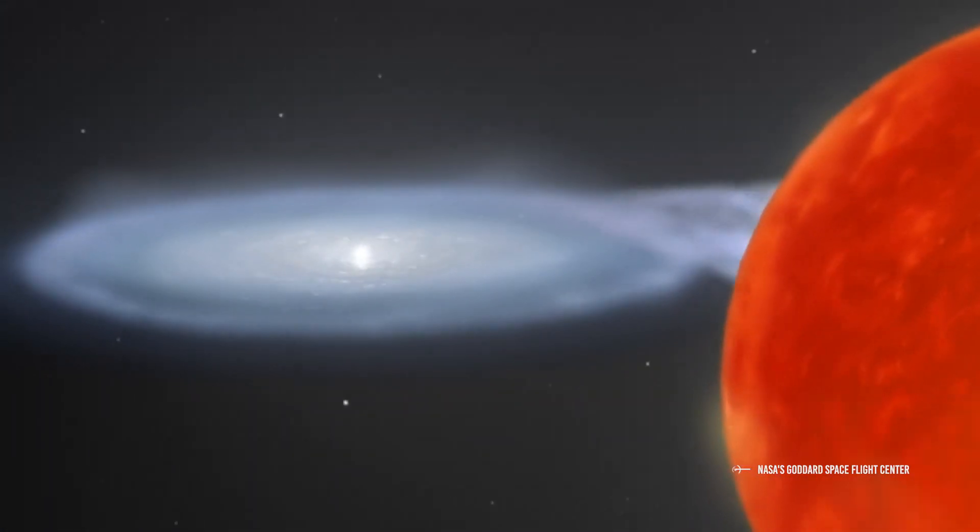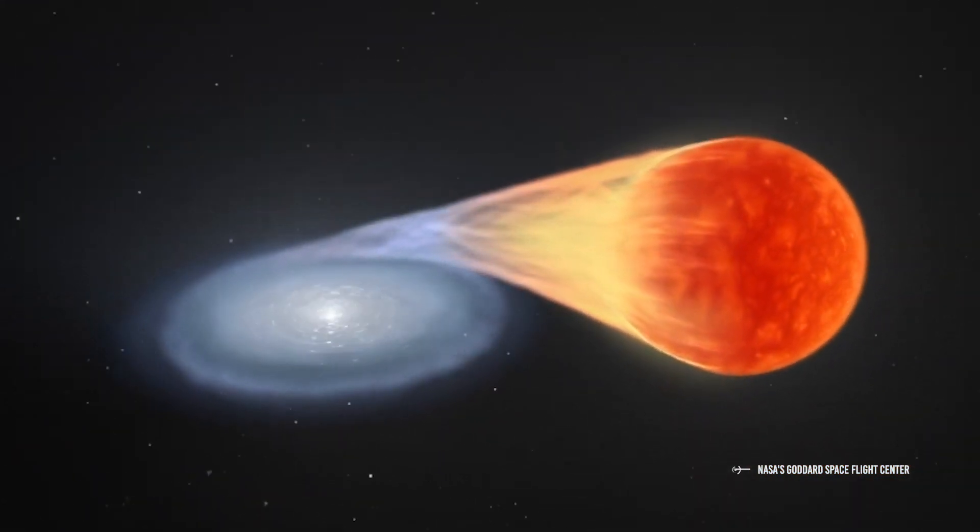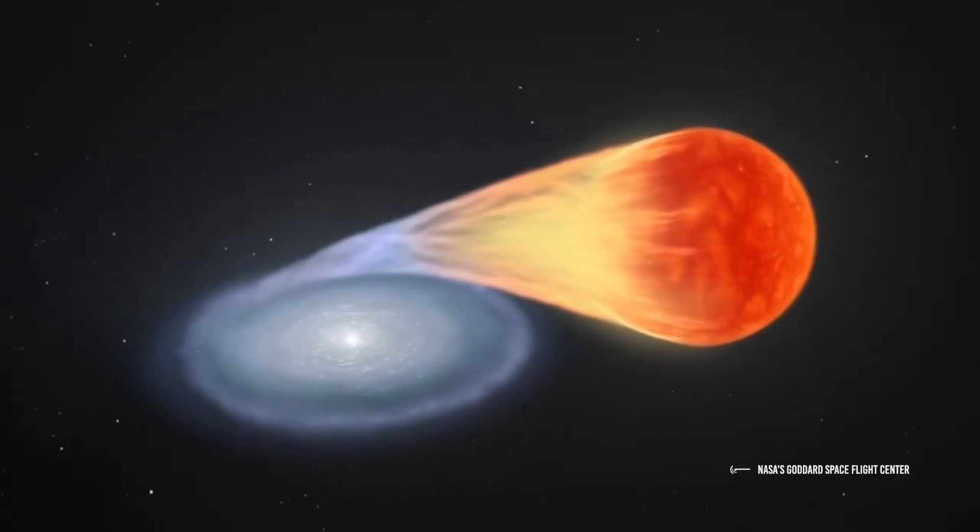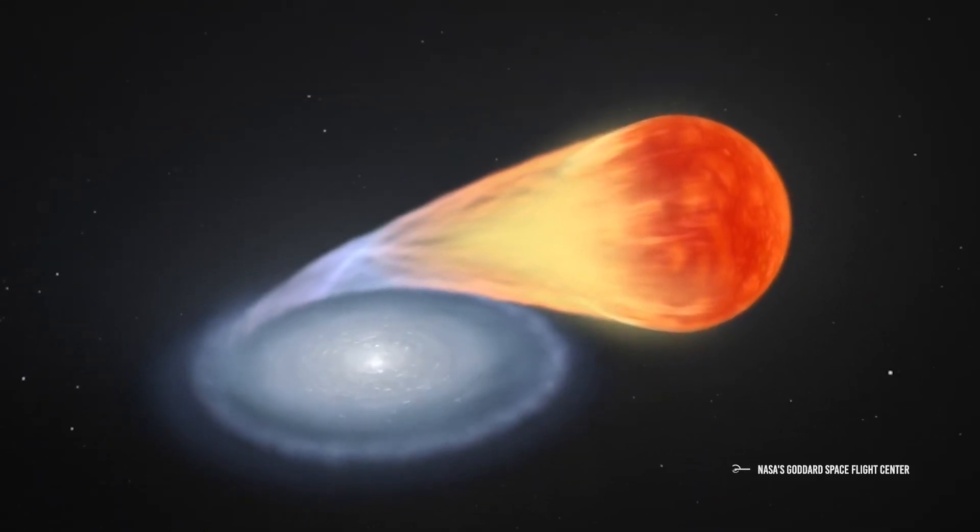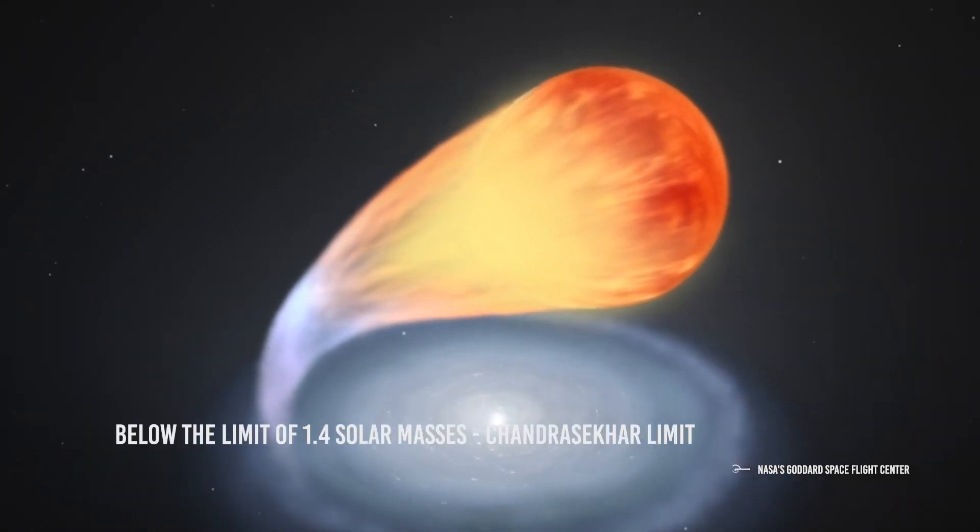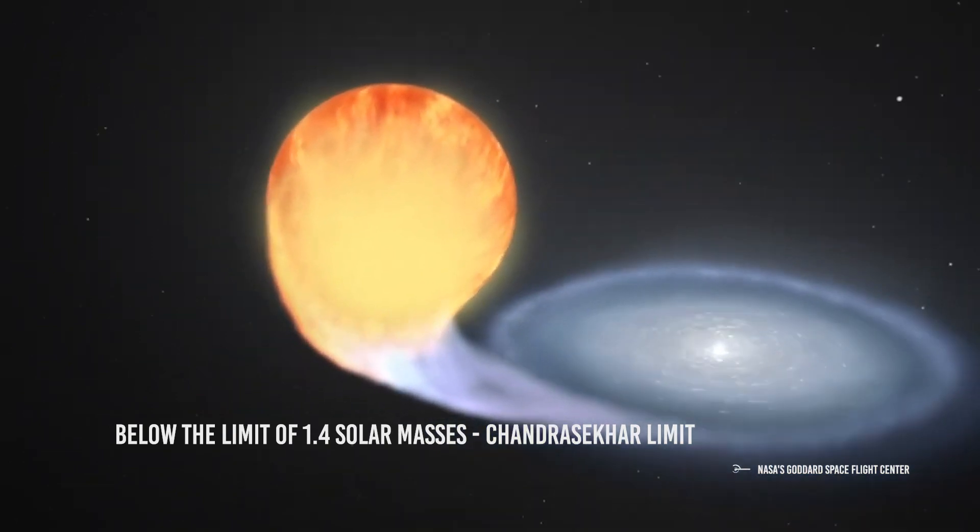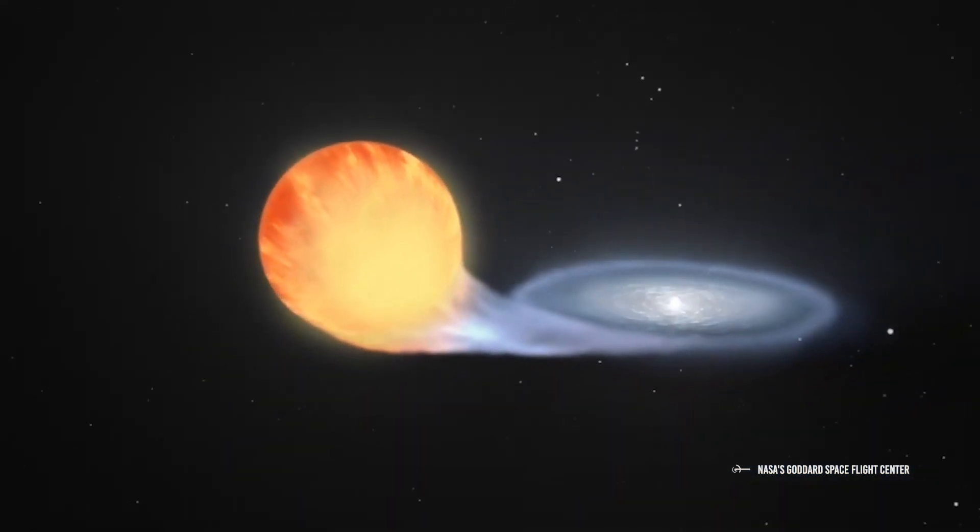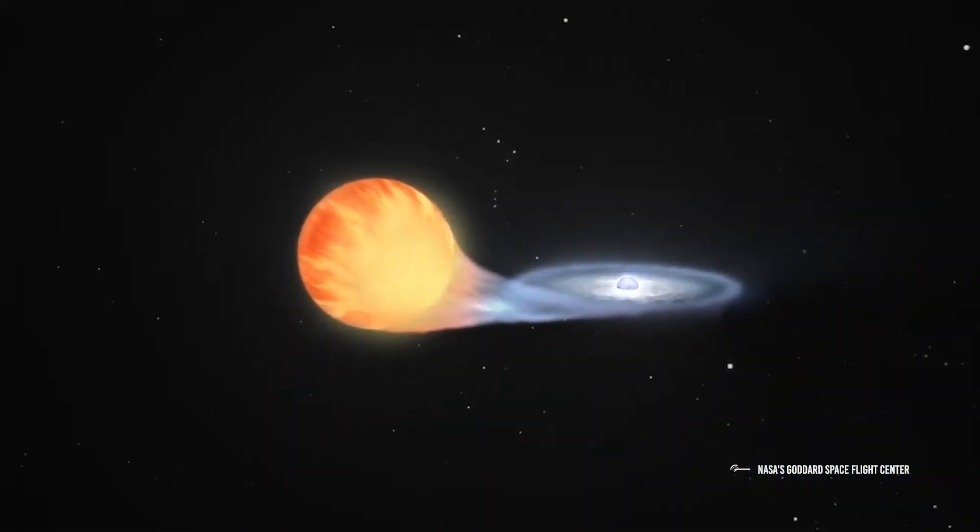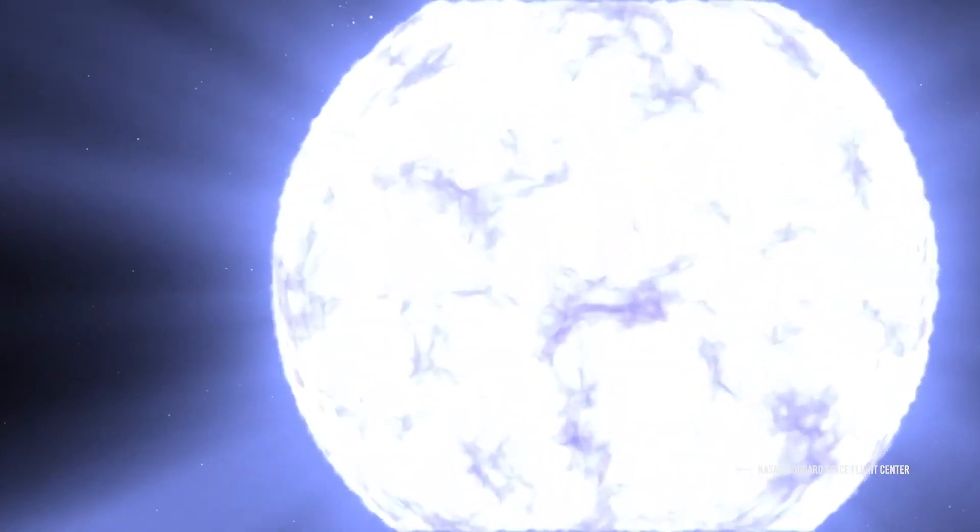Type Ia supernovae occurs starting from scenarios very similar to that of recurrent novae in binary systems formed by a white dwarf and a red giant. The only difference is in the mass of the dwarf. Below the limit of 1.4 solar masses, the so-called Chandrasekhar limit, the dwarf does not have the strength to trigger thermonuclear reactions even in its core and therefore continues its life as a recurrent nova.